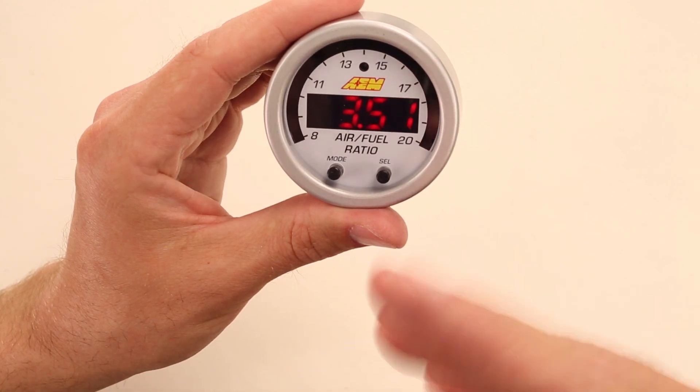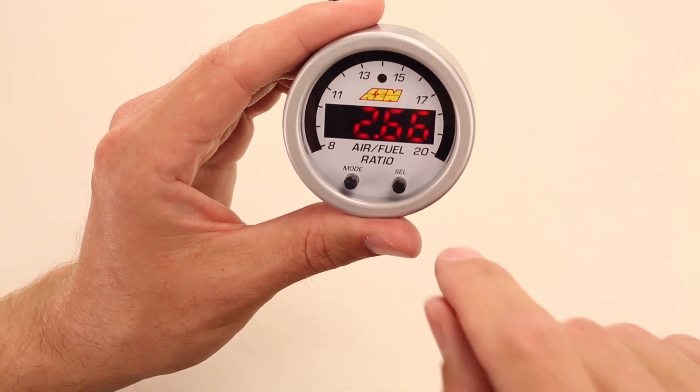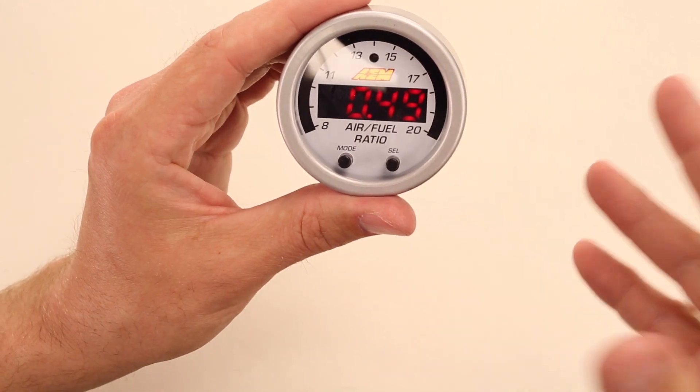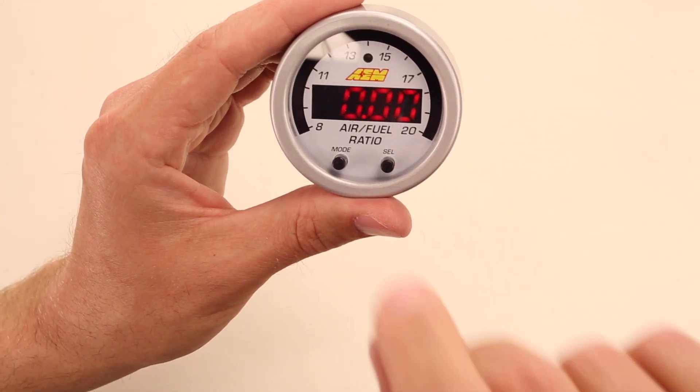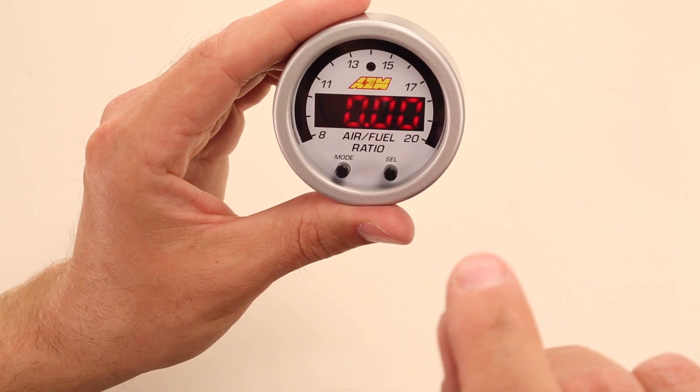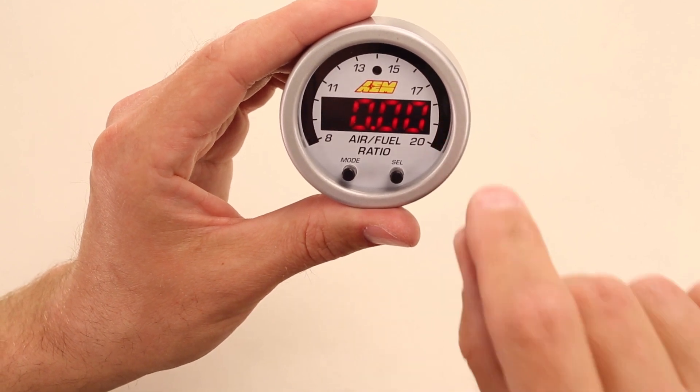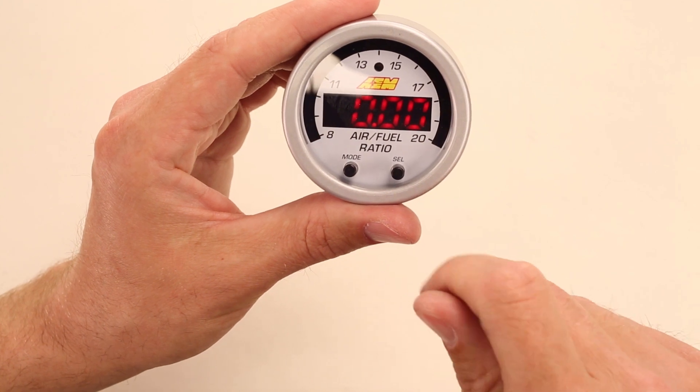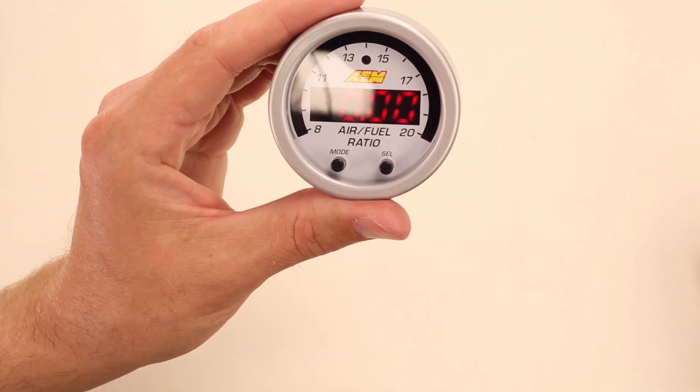Then, because this isn't hooked up to a sensor, it's generating some random numbers. But this would be air fuel ratio. 14.7 to 1 is ideal. That's stoichiometric perfection. If you want to read in stoichiometric air fuel ratio, that's what the gauge defaults to. This gauge is also able to read in both lambda and O2 percentage.